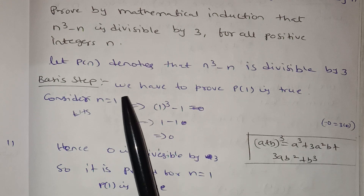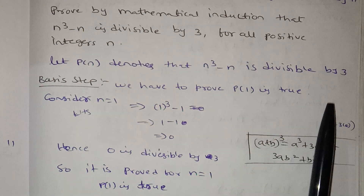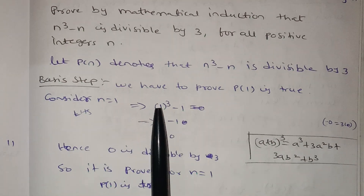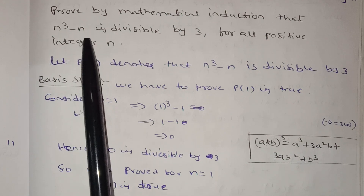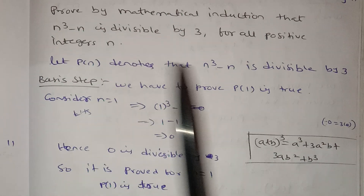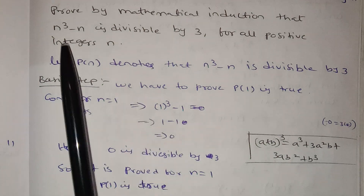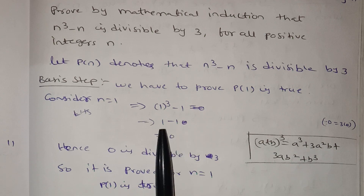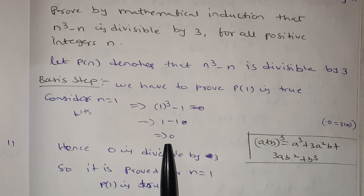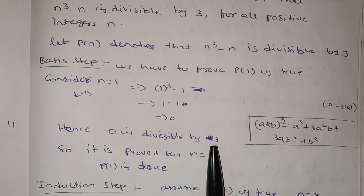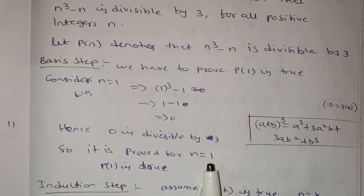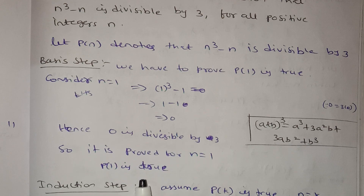What do we have to prove? P of 1 is true. Consider n is equal to 1. So in n's place, n cube minus n becomes 1 cube minus 1. 1 cube is equal to 1. 1 minus 1 is equal to 0. Hence, 0 is divisible by 3. So it is proved for n equal to 1, and P of 1 is true.